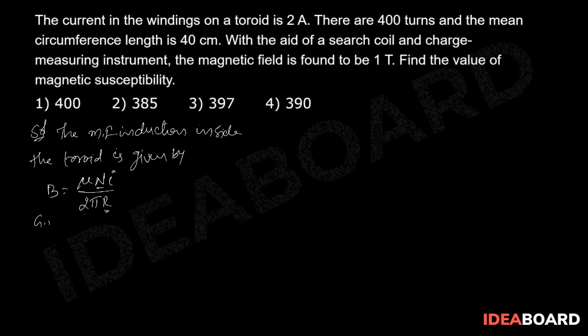Here given that current through the toroid I equal to 2 ampere and number of turns that is 400 and circumference which means that 2 pi r that is 40 centimeter which is equal to 0.4 meters.